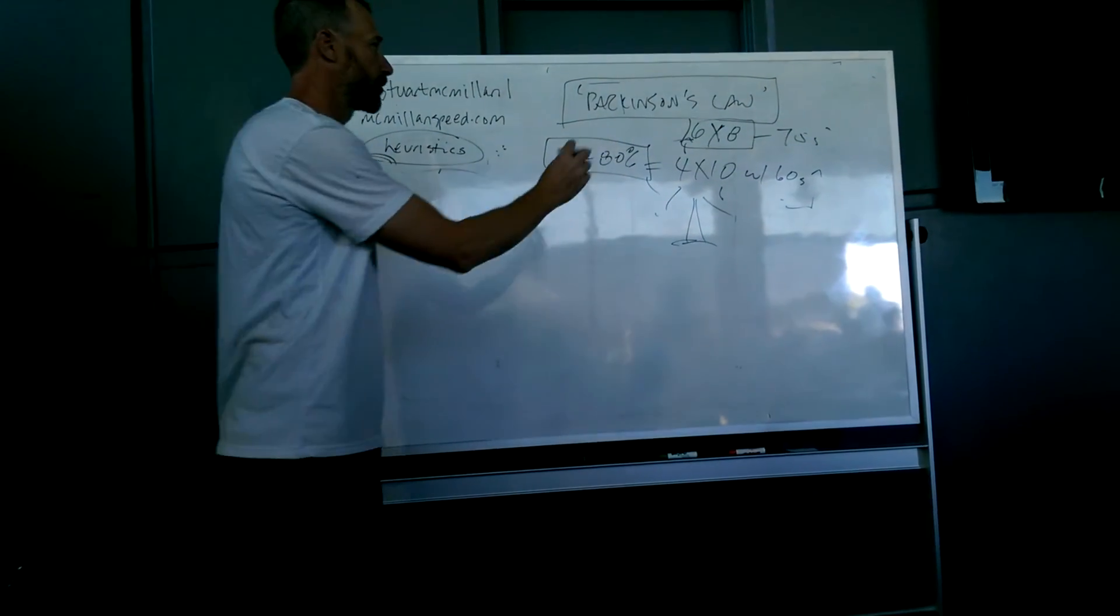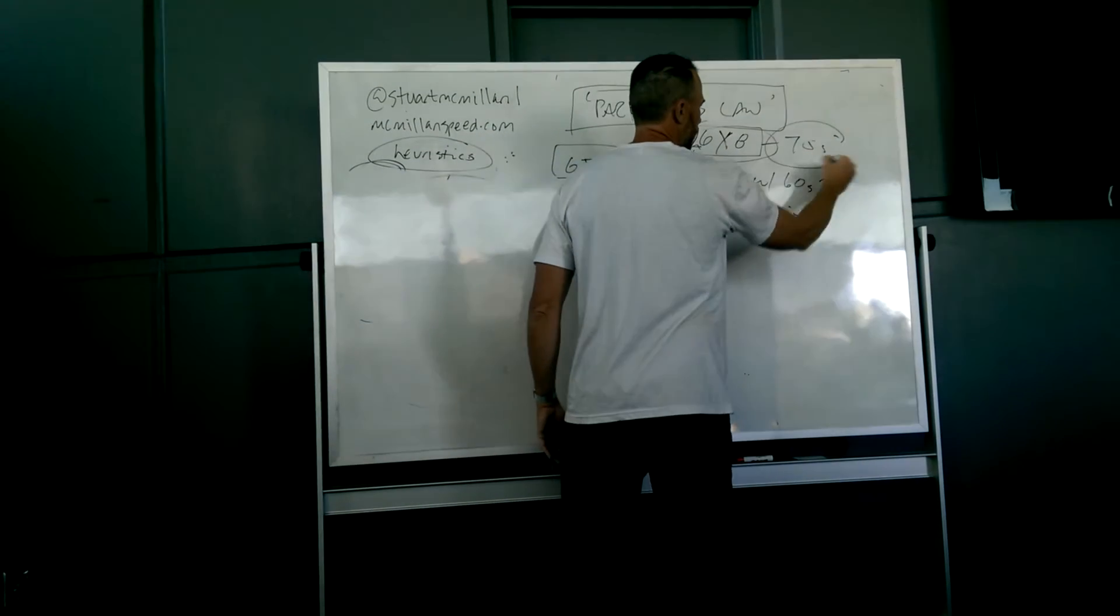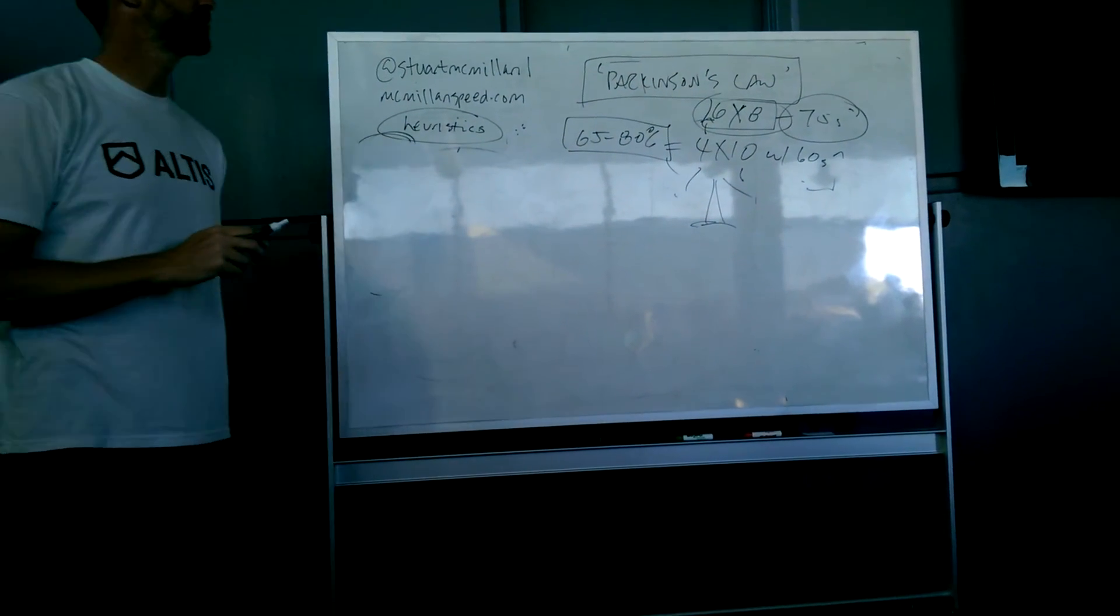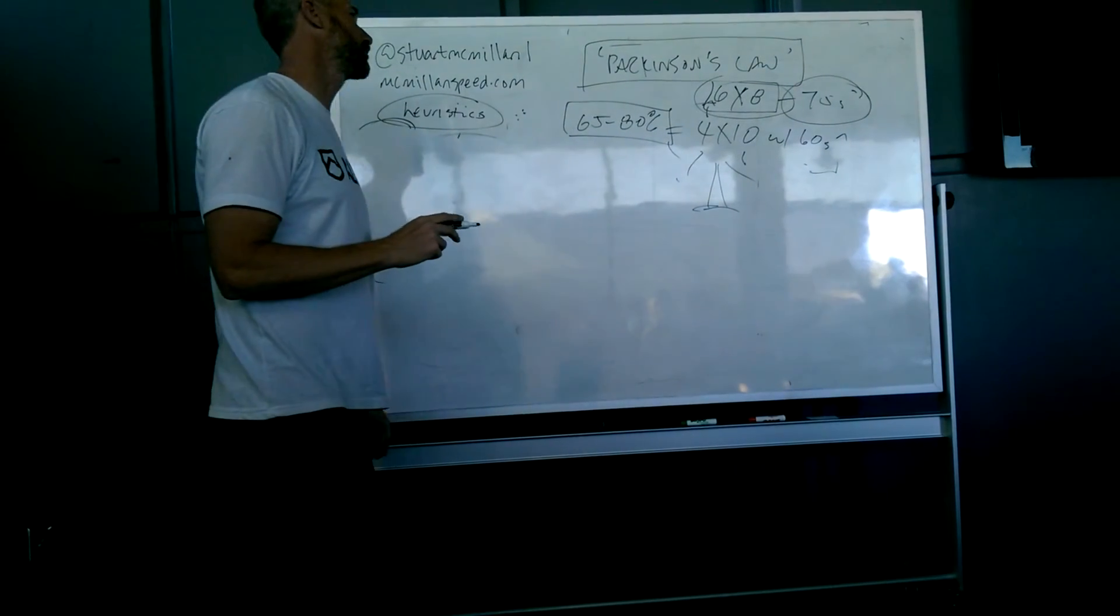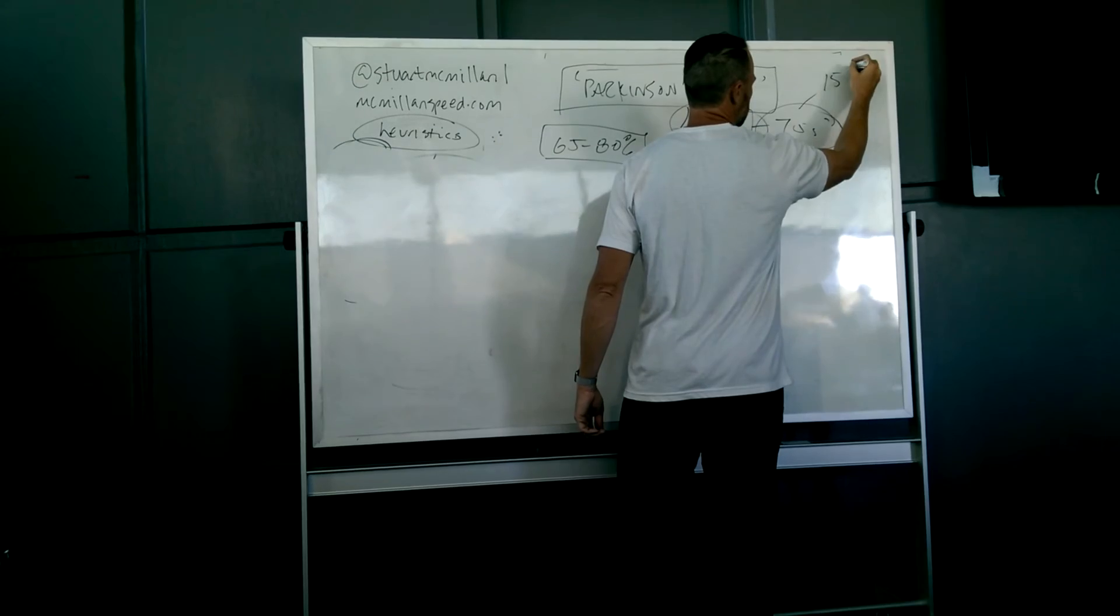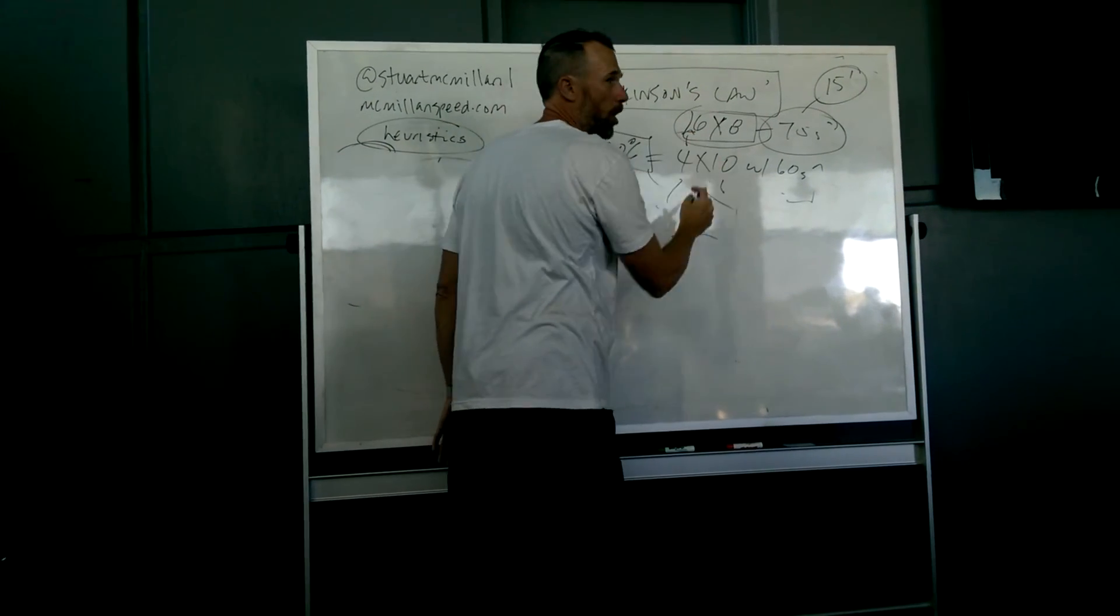Now let's say, what's the length of time that this workout takes? We've got six sets, 75 seconds, that's 9 minutes. Each set would be one minute, so that's 15 minutes. So the length of time would be 15 minutes, following Parkinson's Law.